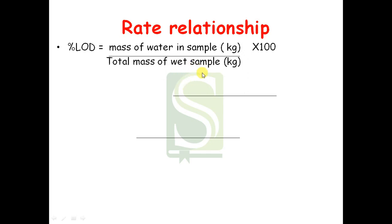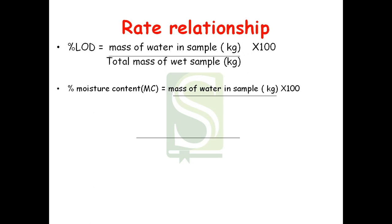As it is a percentage, multiply by 100. The next important term is percent moisture content (MC): it is the ratio of mass of water in the sample divided by the total mass of the dry sample, multiplied by 100. Comparing LOD and MC: both have mass of water in the numerator, but LOD uses the wet sample mass in the denominator while moisture content uses the dry sample mass.